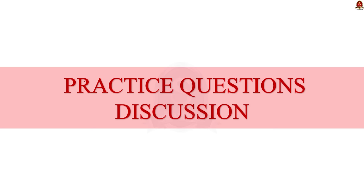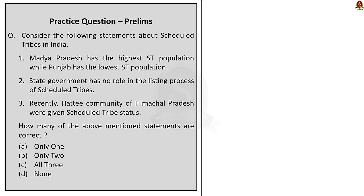Now we have come to the prelims practice question discussion. The first question is about Scheduled Tribes in India. Statement: Madhya Pradesh has the highest Scheduled Tribe population while Punjab has the lowest. This is wrong — Madhya Pradesh has the highest ST population, but Punjab, Delhi, and Haryana have no ST population. The second statement — that the state government has no role in the listing process of Scheduled Tribes — is also wrong. As we saw, the state government sends the list of communities to be included in ST status to the Centre. The third statement — that the Hathi community from Himachal Pradesh was given Scheduled Tribe status — is correct. The correct answer is option A.